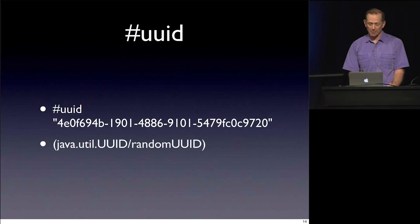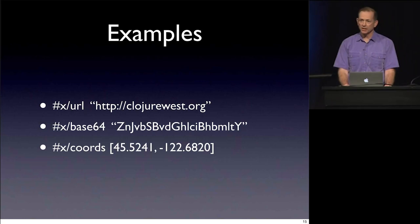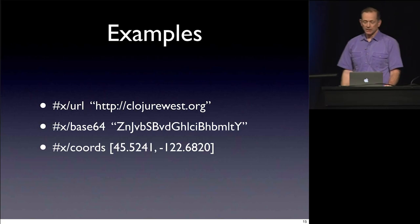UUID is just a way of getting unique values — you can call out to Java to get that. A few other examples of things people might do with tag literals: a string, numbers, a symbol after the hash sign and tag name, and some kind of data. For example, coordinates — you can imagine latitude and longitude as two floating-point numbers in a vector.